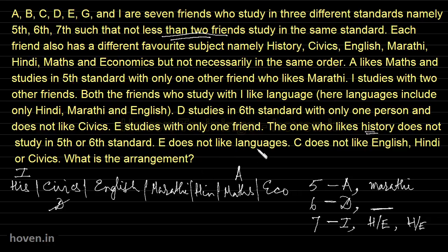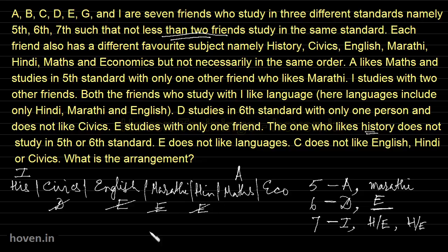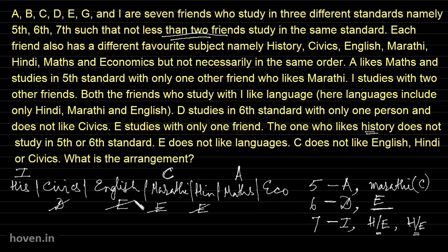E doesn't like languages. So if E doesn't like languages, E can't be with A because Marathi person is with A, and E can't be with I because Hindi or English people are with I. So this is the only place where E is possible — sixth standard. I'll put a cross to indicate E can't be elsewhere. C doesn't like English, Hindi or Civics. This means C can't be in seventh or sixth standard, and sixth is already finalized. So C is the person who likes Marathi — I will write C there.